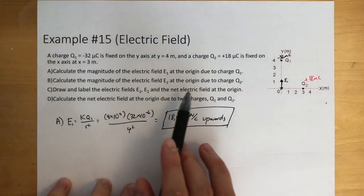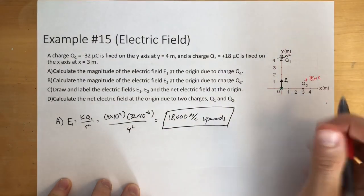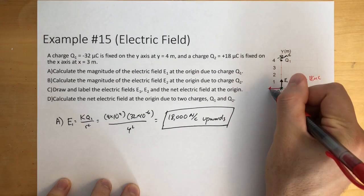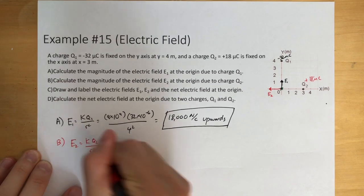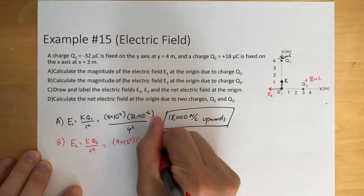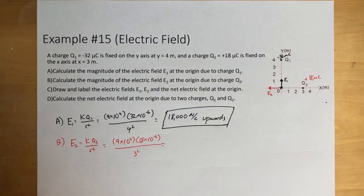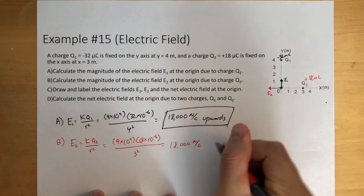Now calculate the magnitude of the electric field E2 at the origin due to charge 2. This one is positive, so it's emitting outwards; at the origin it's going to be going to the left. E2 equals k times Q2 over r squared: 9 times 10 to the 9th times 18 times 10 to the negative 6, divided by 3 squared. This gives 18,000 newtons per coulomb to the left.